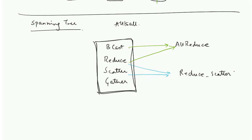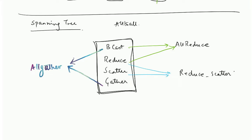The third operation is all-gather. How do you do all-gather? You just do a gather followed by a broadcast — first you gather all the data onto a single node and then broadcast it to all the nodes. Not so difficult.